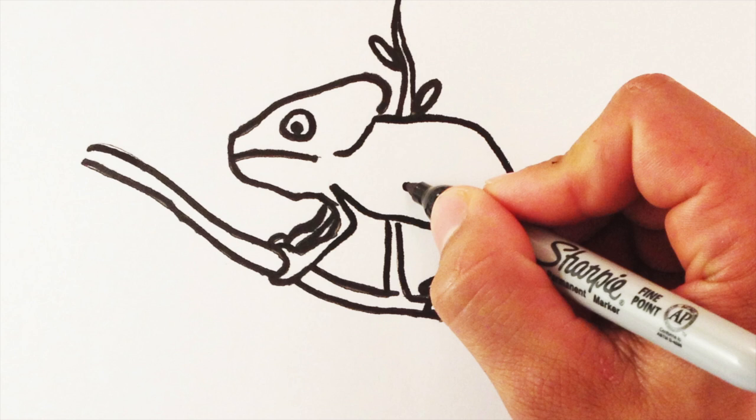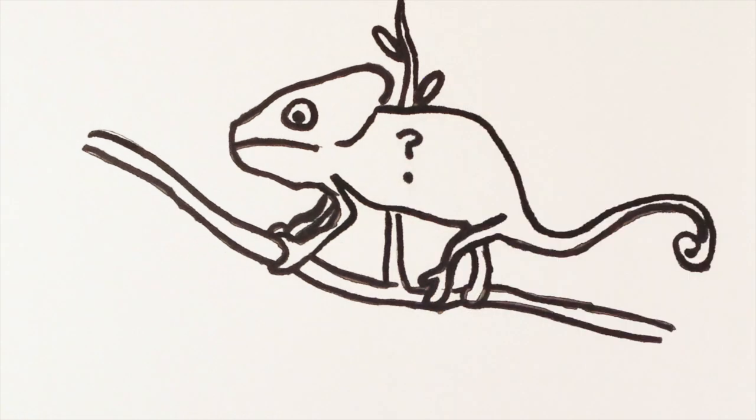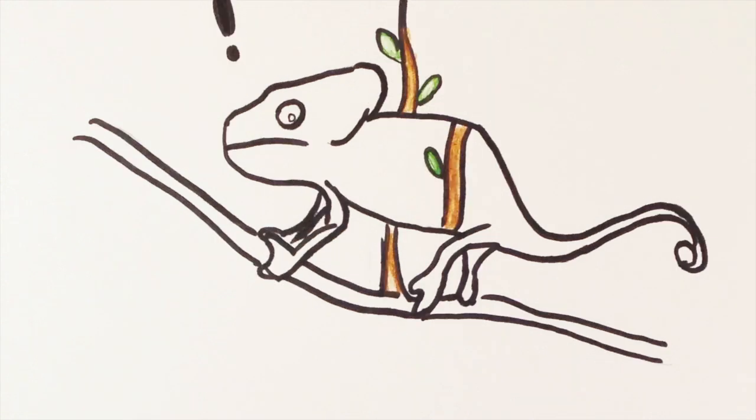But how could a chameleon even have such a range of colors? Does each chromatophore organ hold a different color? And even if it does, would that color be in the right spot at the right time? Well, the answer is not quite.